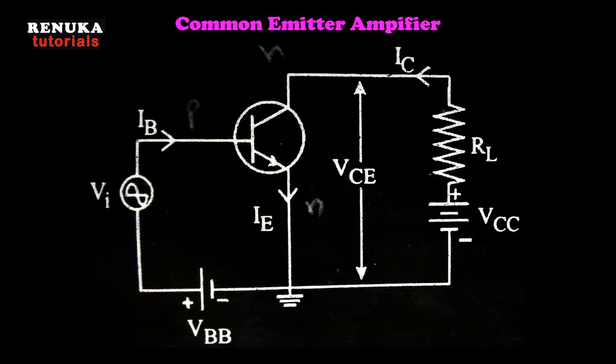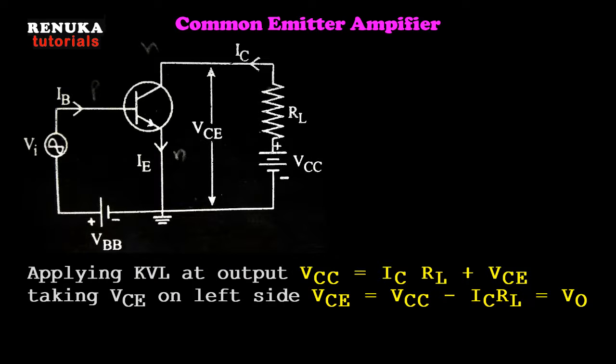The second configuration is the common emitter configuration. Here, the emitter is common to both the input and output sides. The input VI is connected between base and emitter, and the output is taken across the collector and emitter. The emitter-base junction is forward biased and the collector-base junction is reverse biased. The collector-to-emitter voltage VCE is given by VCE = VCC − IC·RL, derived using KVL, and this VCE is the output voltage.